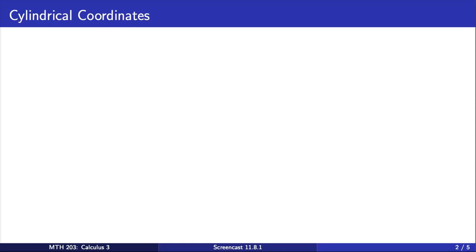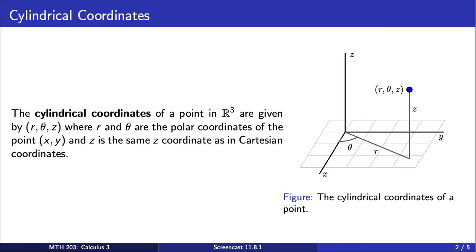Let's start with cylindrical coordinates, which should look familiar from our work earlier using polar coordinates. The cylindrical coordinates of a point in R³ are given by (r, θ, z), where r and θ are the polar coordinates of the point (x, y), and z is the same z-coordinate as in the Cartesian coordinates. You can see a picture of what this looks like on the left.